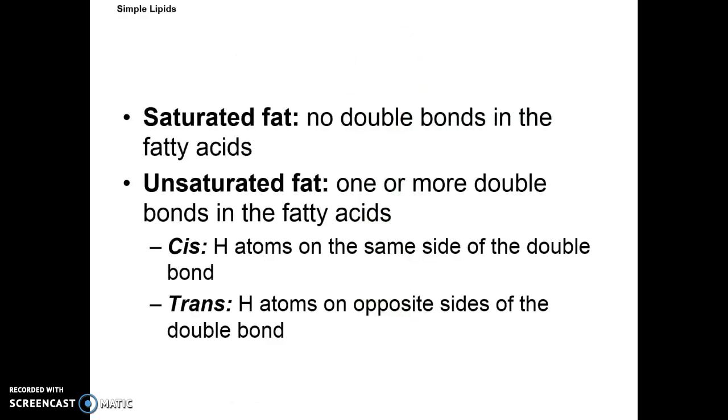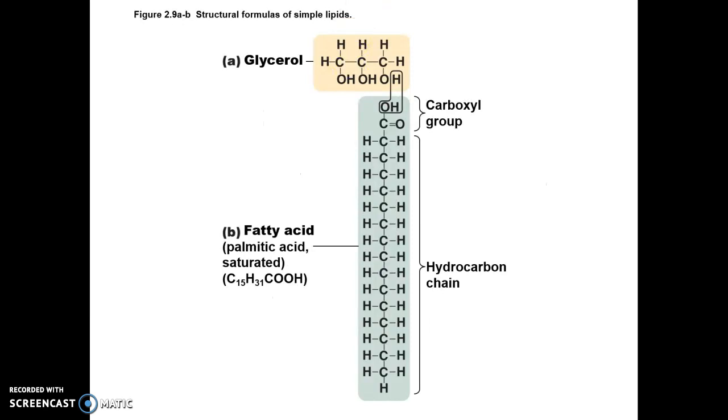Saturated fats, no double bonds. Unsaturated fats, one or more double bonds. And what's interesting is that if you tried to use an unsaturated fat in a lipid bilayer, the cell membrane would be unstable because there's not as much rigidity. Here you have a saturated fat. Notice the long chain. Well, those can be stacked side by side next to each other, creating a stable wall.